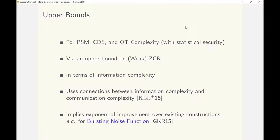Our upper bounds sometimes give an exponential improvement over existing constructions for PSM, CDS, and 2PC. A concrete example is the bursting noise function, which was introduced by Ganor, Kohl, and Raz in 2015 as a function with very low information complexity, exponentially smaller than its communication complexity.